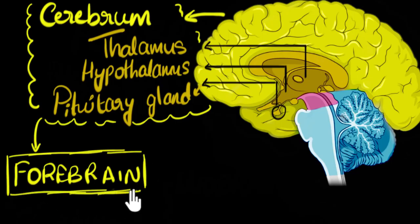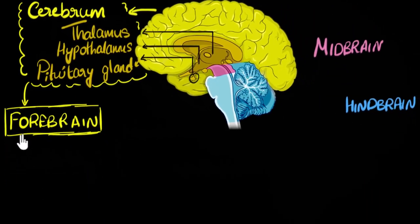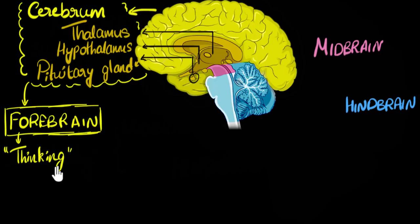So what do they do? What are the functions of the forebrain? We already said voluntary functions, but let's dig a little deeper. One of the things is thinking — and when I say thinking, I'm including a lot of things: your thinking, your learning ability, your speech, language — all of that comes from your forebrain.